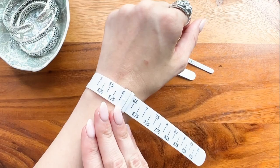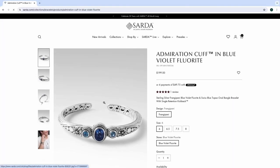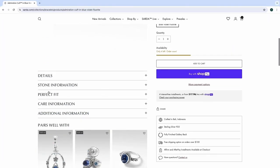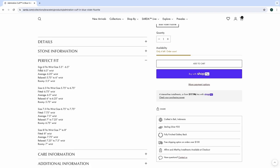On each bracelet under Perfect Fit, we guide you to a perfect fit based on your wrist size and the fit you prefer on bracelets: fitted, average, relaxed, or roomy.